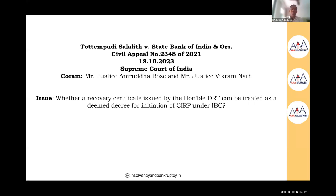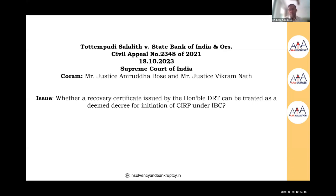If the repayment plan is approved by the lenders, it can prevent the SARFAESI action. If the repayment plan is rejected by the creditors, the moratorium will finish after the end of the individual insolvency process and bankruptcy will start. In bankruptcy, the bankruptcy trustee will have the right to sell those assets, give the proceeds to the bankers, and declare the person a bankrupt.